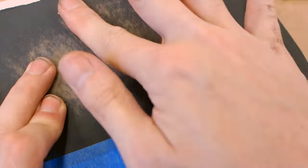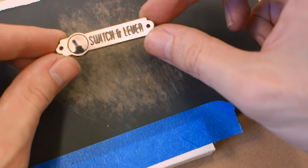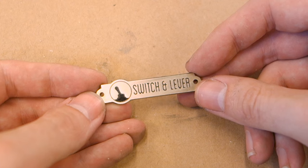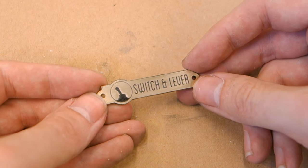You can also varnish the plaque when done if you want to prevent it from tarnishing. Personally I like it brushed and I like tarnished brass, so I'm leaving it as it is.